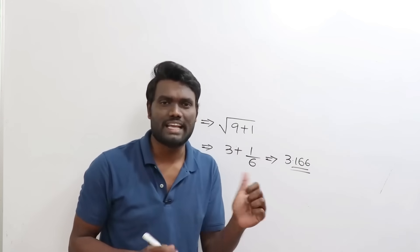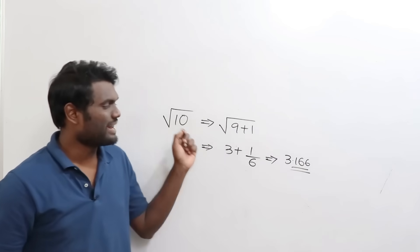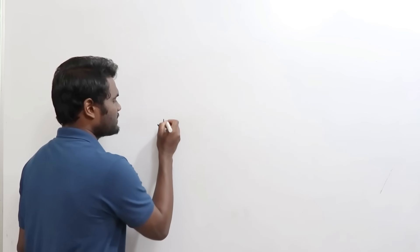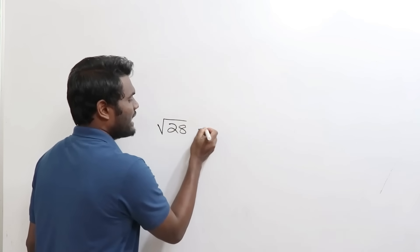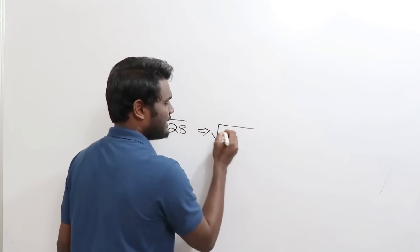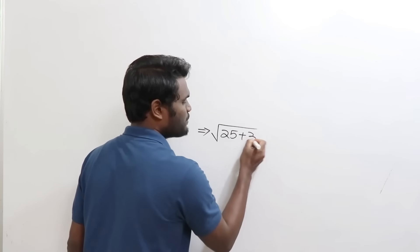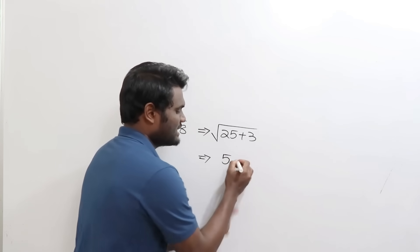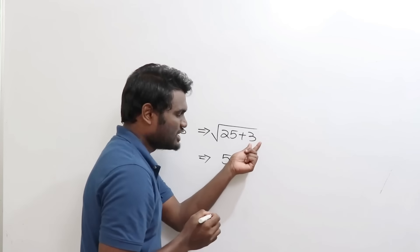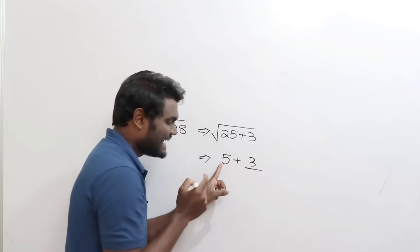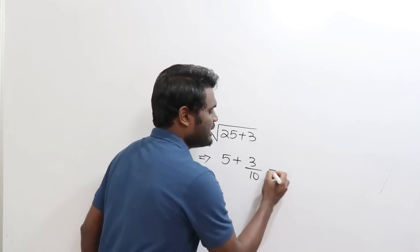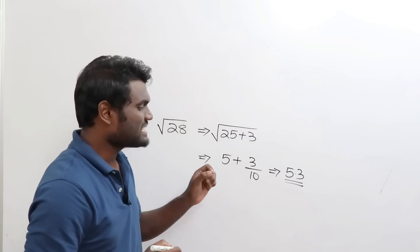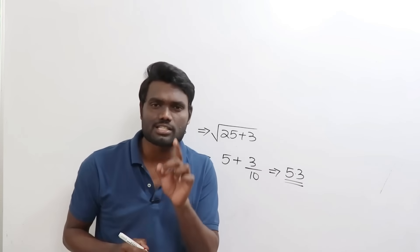Let us calculate square root of 28. Write 28 in terms of 25: this gives 25 plus 3. Square root of 25 is 5, so write 5. As it is plus, write plus. It is 3 more, so write 3 divided by double of 5, which is 10. The value is 5.3. So square root of 28 ≈ 5.3.